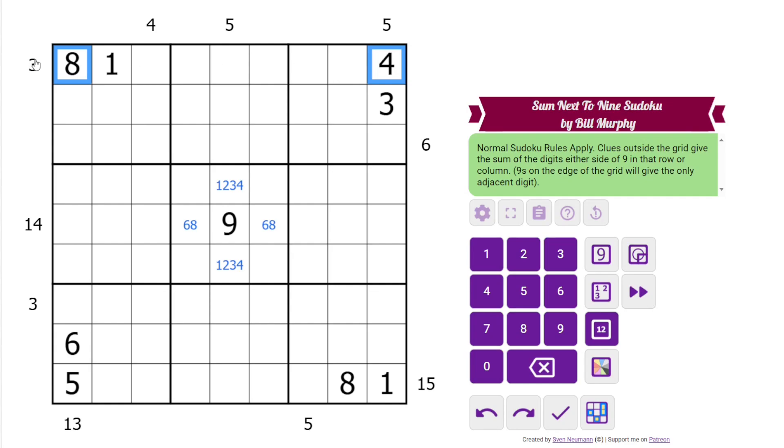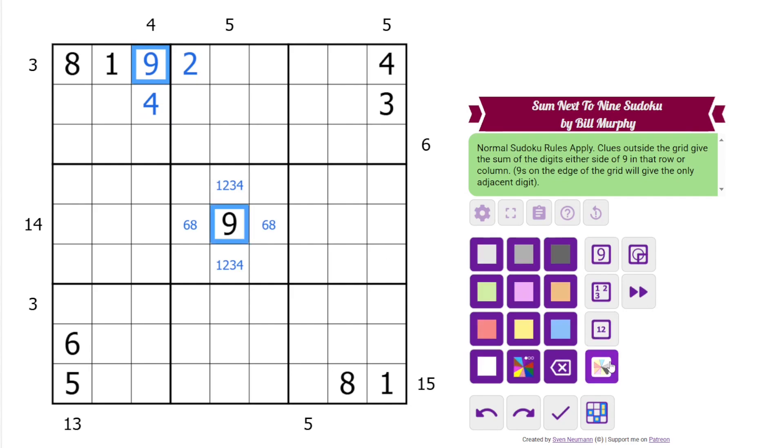So the only way to make 3 in two cells is 1, 2, and we know where the 1 is, so it must be next to the 9, and the 2 must be next to the 9. And then this clue is resolved with a 4. That's the only cell next to this 9. I'm going to go ahead and highlight these 9s, just so we can see that a little more clearly.